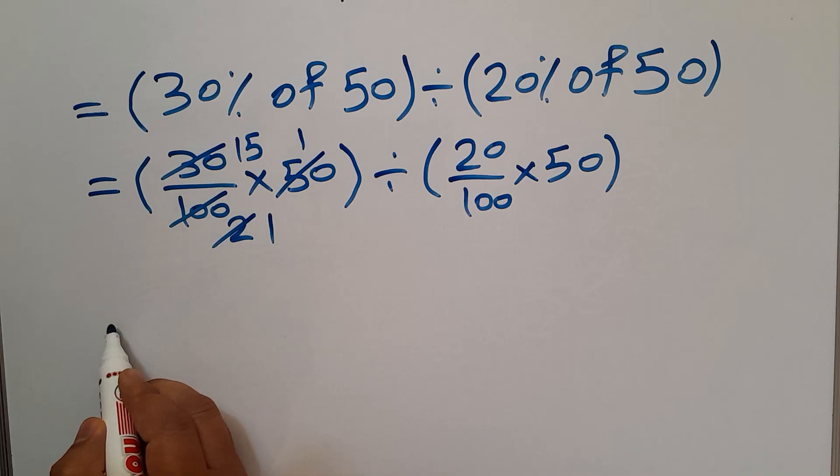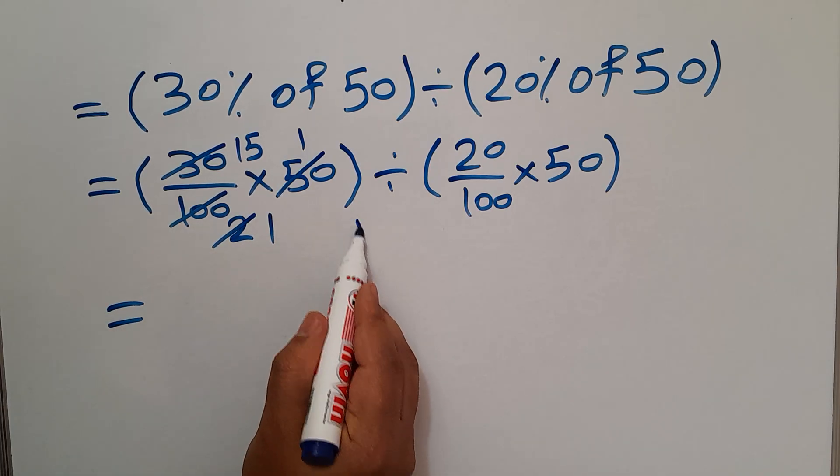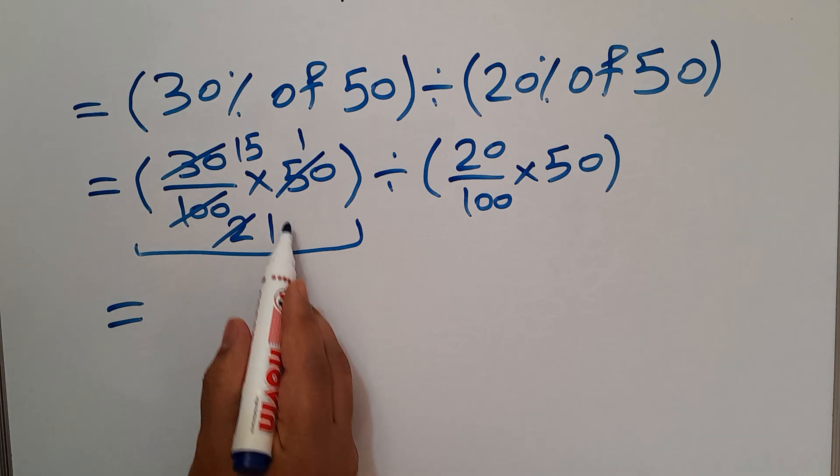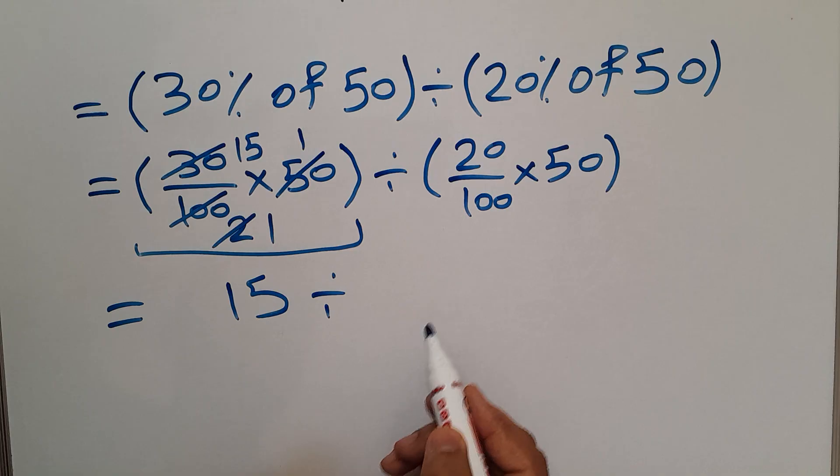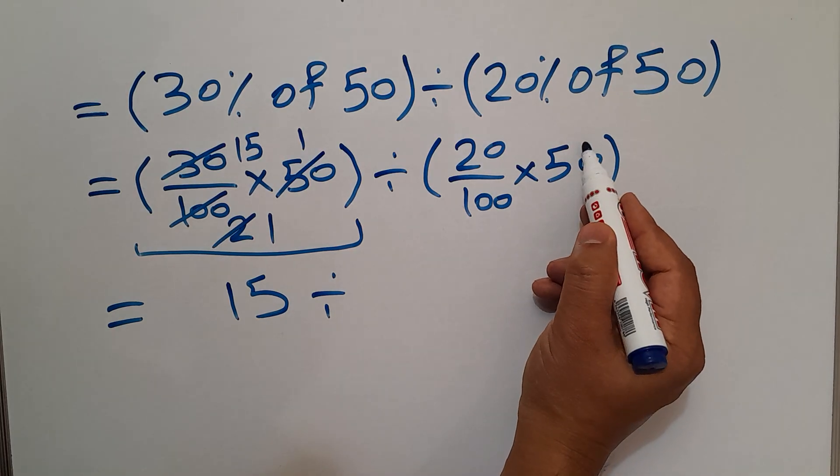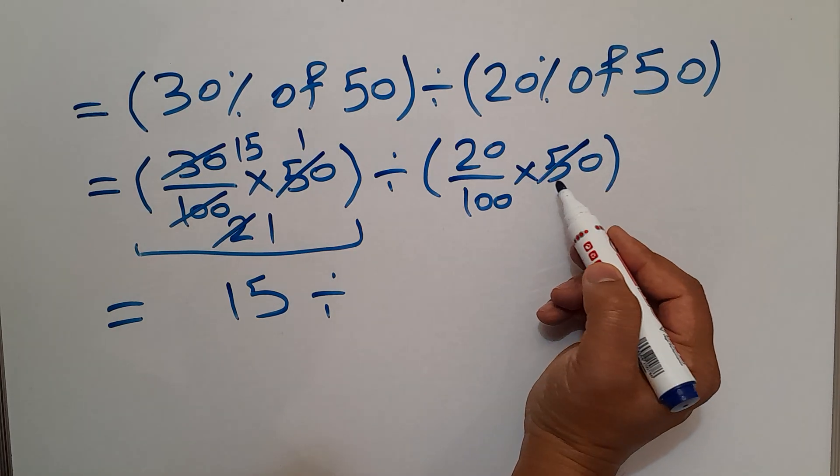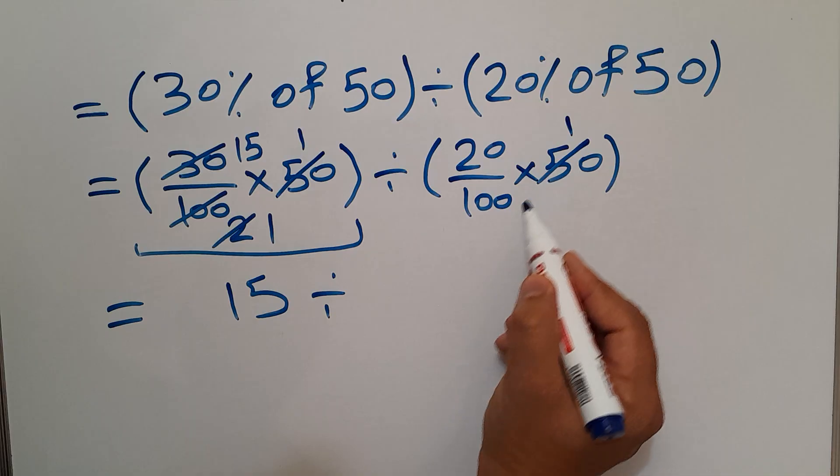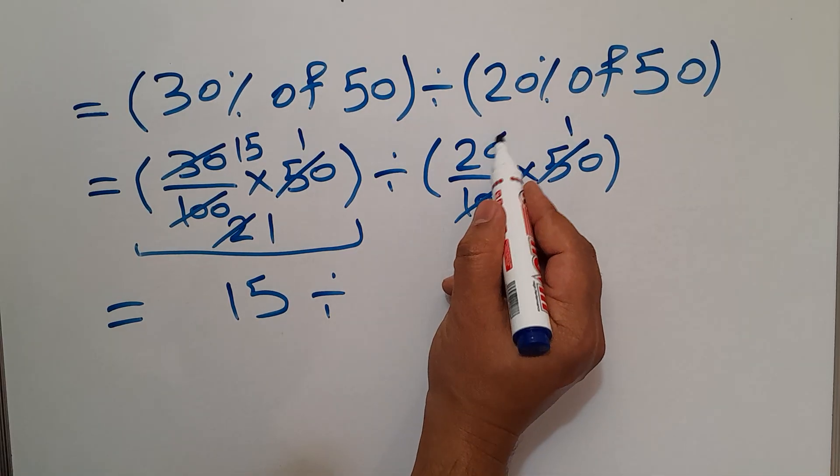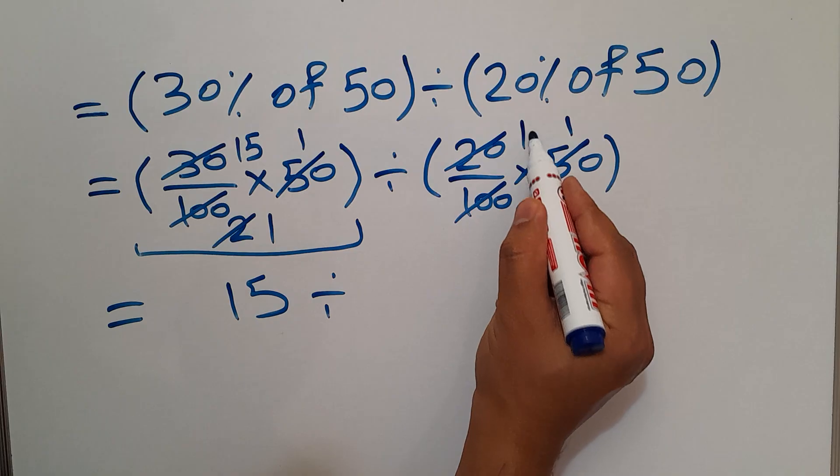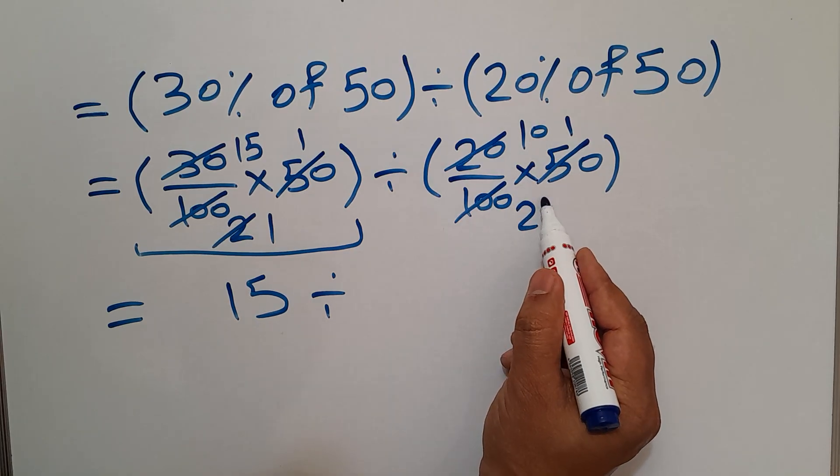And 15 divided by, here again, 50 divided by 50 equals 1, 100 divided by 50 equals 2. 20 divided by 2 gives us 10, and 2 divided by 2 gives us 1. So 15 divided by 10.